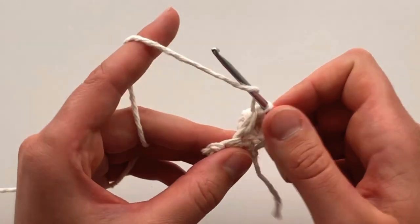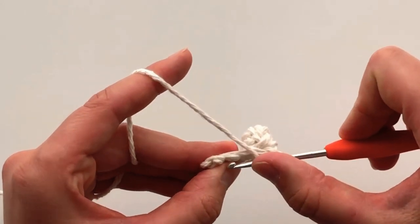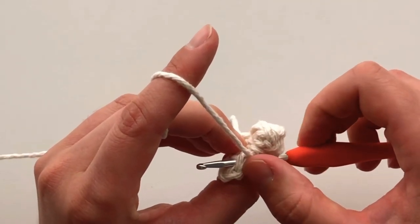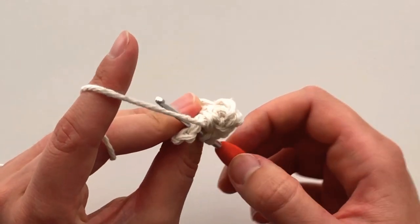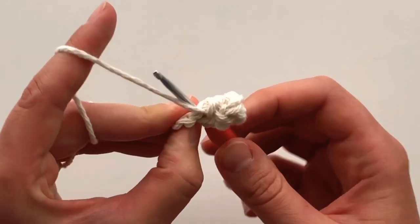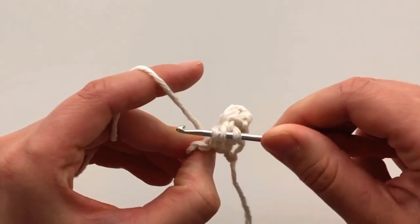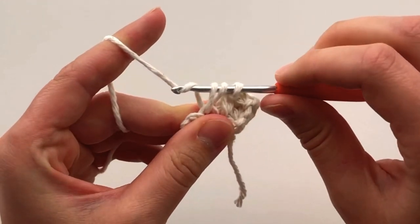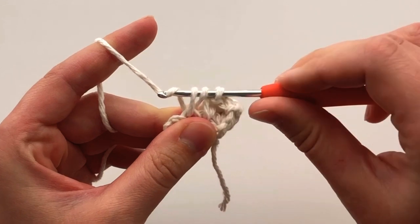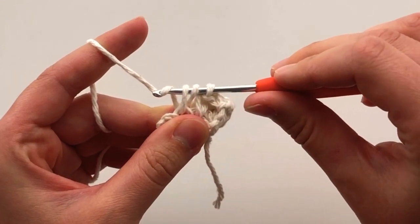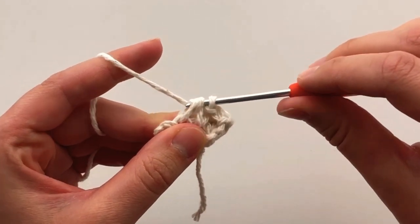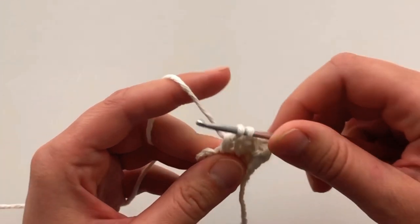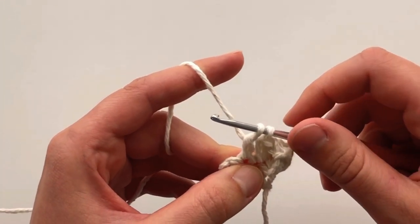Yarn over, insert your hook under the front and back loop of the V, yarn over again, and pull through. You now have 3 loops on your hook. Yarn over, and pull through the first and second loop, leaving the third one on your hook. We are not going to finish the double crochet and pull through those at this time.